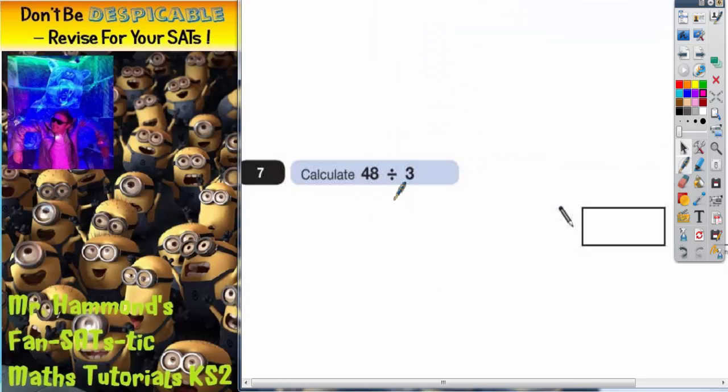Question 7. Calculate 48 divided by 3. So we've got to divide. Now with division there are two ways of doing this.